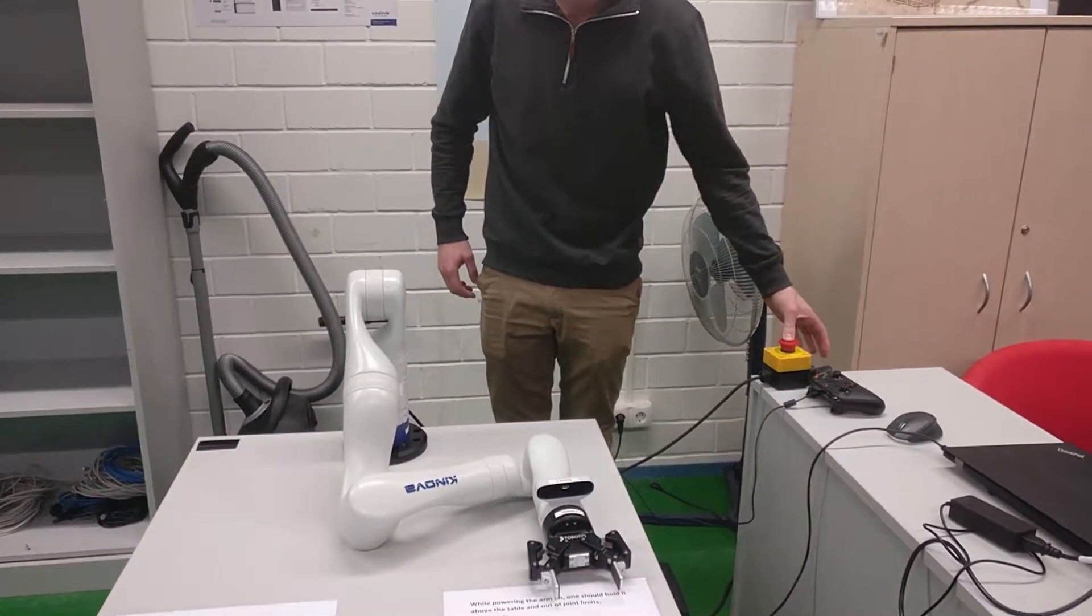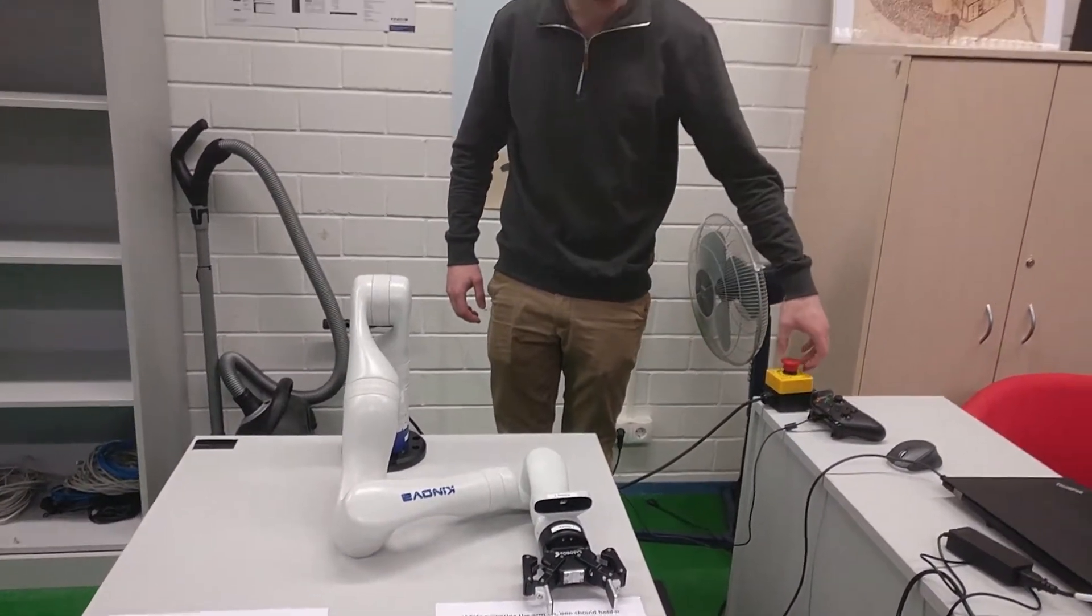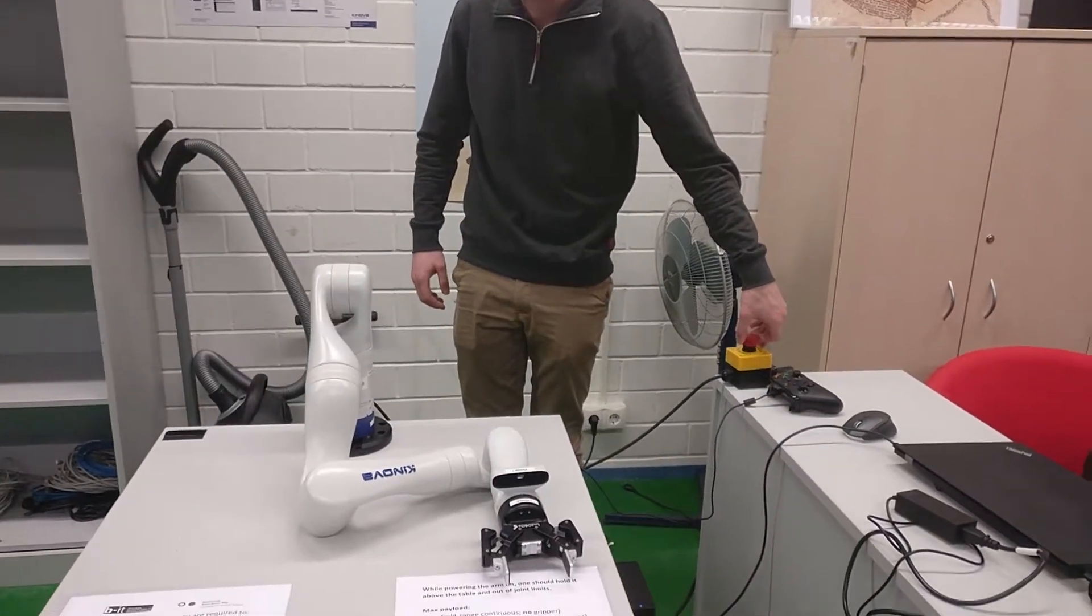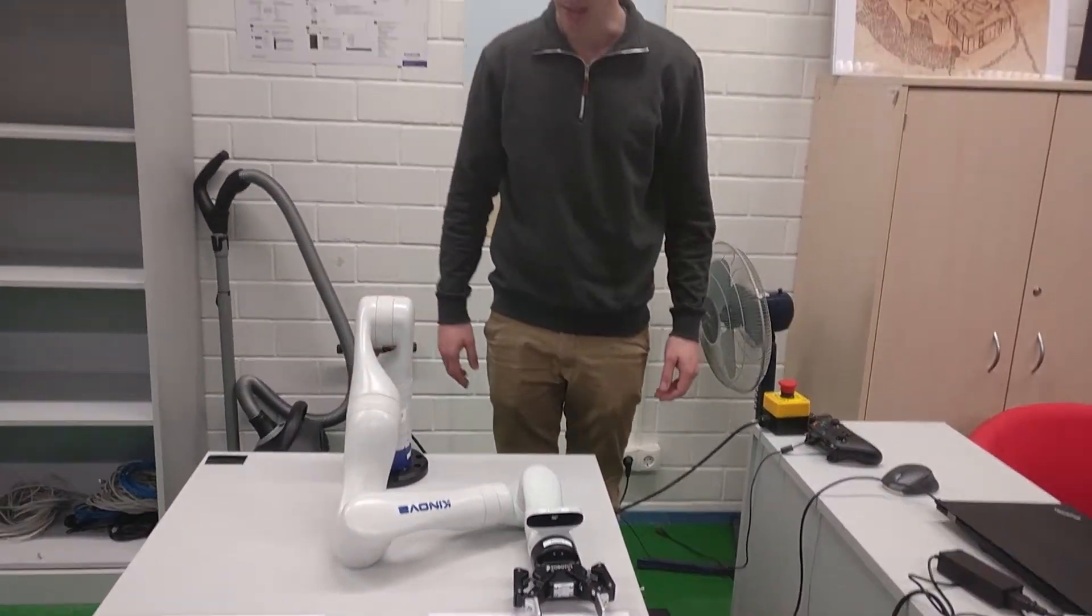When the emergency stop button is down, there is no power to the robotic arm. To power up the arm, you need to turn and it will pop up. The robot arm is now powered.